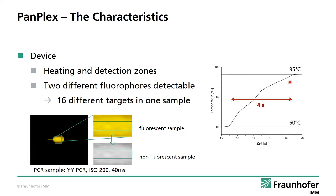To increase the temperature of the PCR mix from 60 to 95 degrees takes about 4 seconds. Additionally, two different fluorophores can be detected when the chamber is positioned above the detection zone. In total, 16 different targets from one sample can be analyzed in parallel.